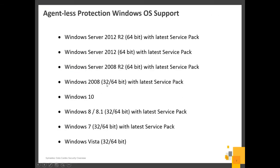For agentless security, the operating systems currently supported are Windows only. VMware recently introduced a client-side driver for Linux, and we're looking to add Linux support in our next release — VMware tells us what's ready for agentless security and we follow suit. So currently if you're looking for hypervisor-level AV or IPS in this structure, it's Windows only. We can protect Linux, and we'll talk about that in a bit.